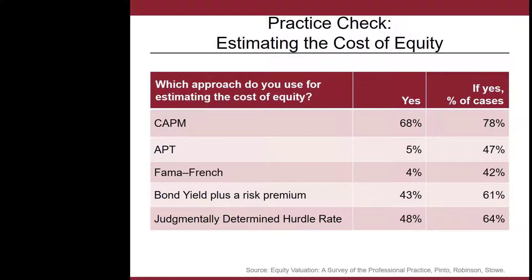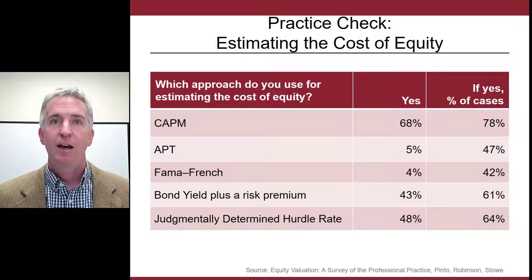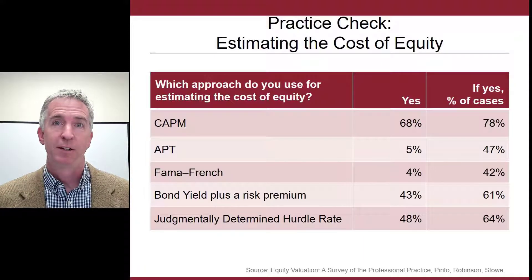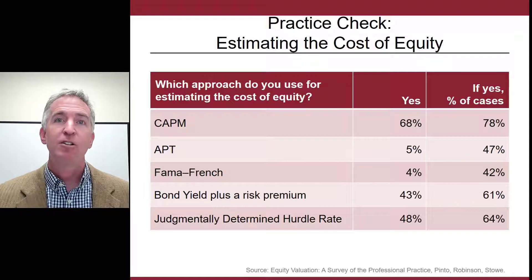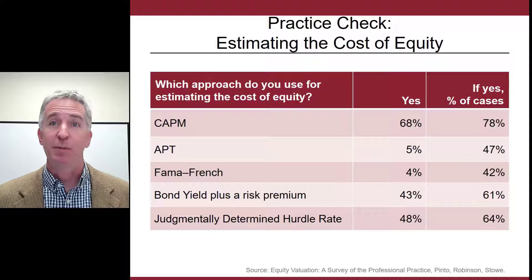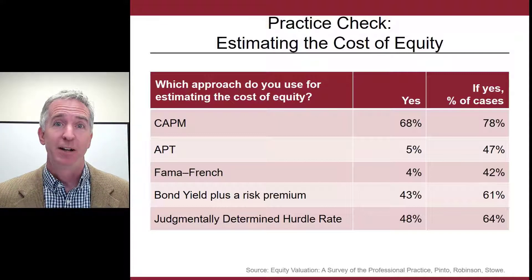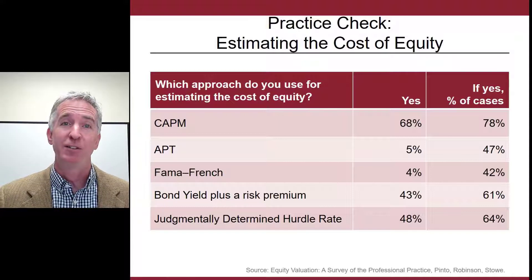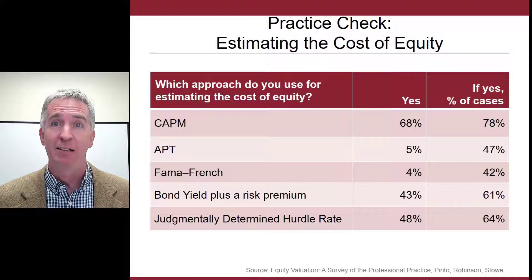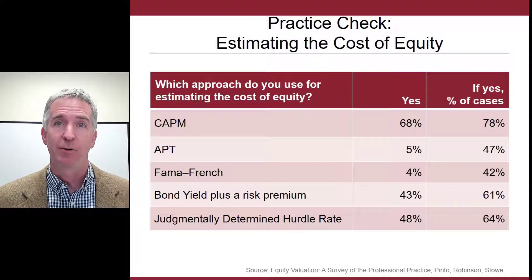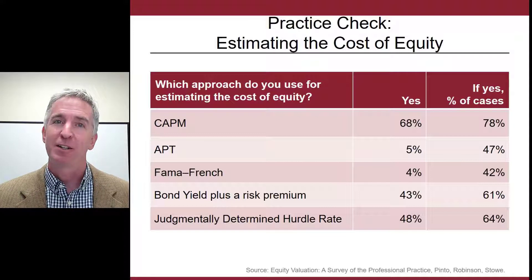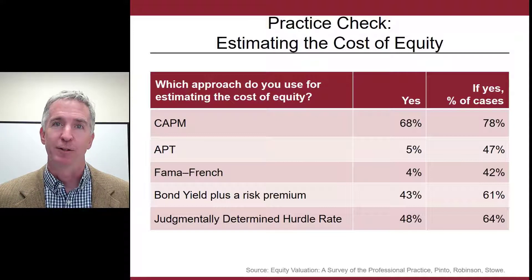How are practicing equity analysts coming up with the cost of equity? In the largest survey done of practicing equity analysts, it revealed that a lot of them are using very basic techniques. 43 percent answered they're taking the bond yield and adding on a risk premium — a pretty archaic way of getting the cost of equity.